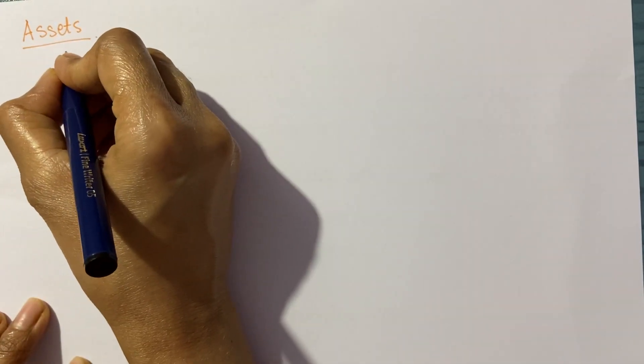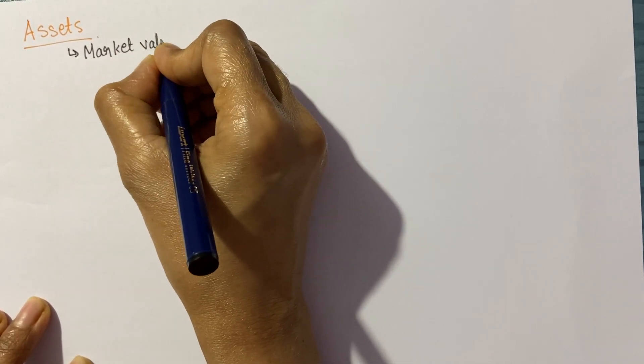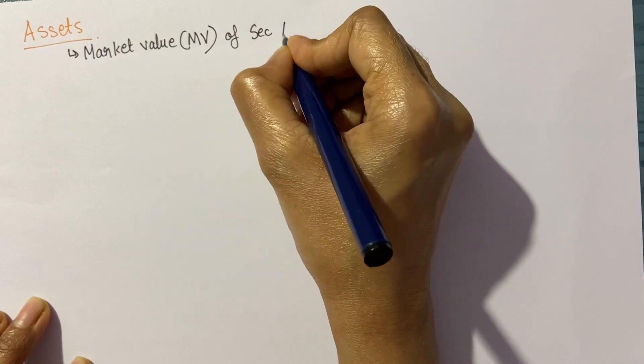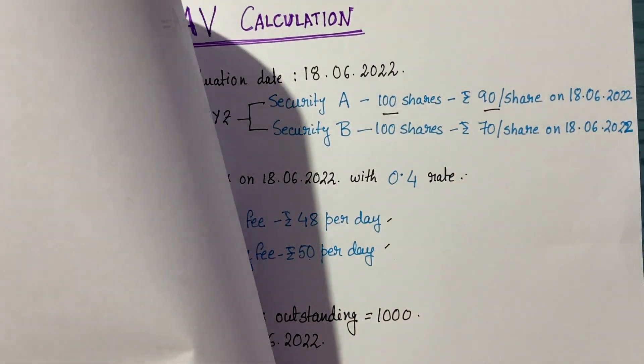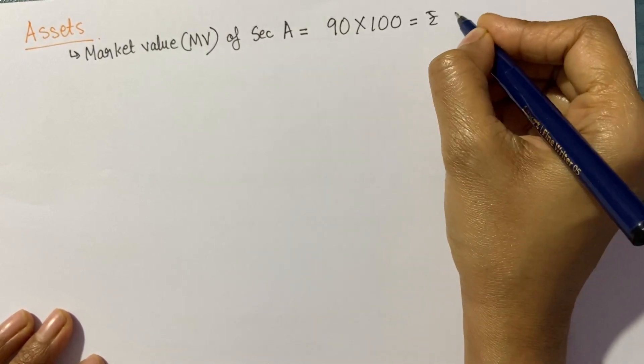First, we take the asset component. When we calculate assets, we start with market value. We'll calculate the market value, or MV, of security A. As I mentioned, security A's price is 90 rupees and I have 100 shares. So 90 times 100 shares